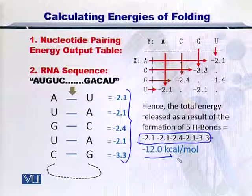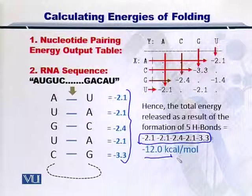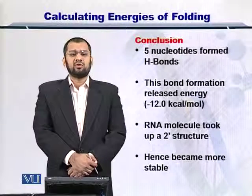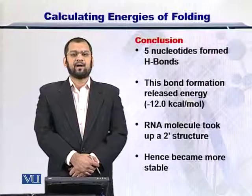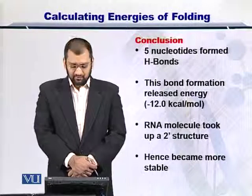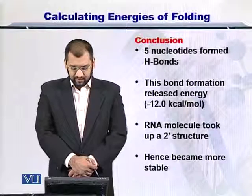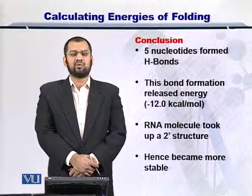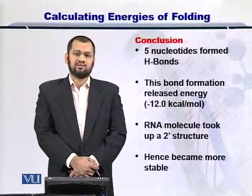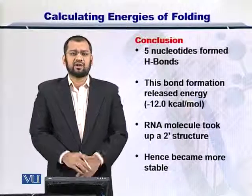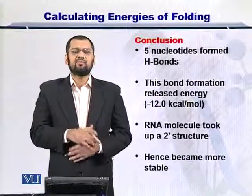The minus sign indicates that energy is released in the process, and we know that if the RNA molecule folds and energy is given out, the RNA molecule becomes more stable. To conclude, the nucleotides bonding together by making hydrogen bonds incur stability onto the RNA structure and give it a functional quality. The net energy released in this example was minus 12 kilocalories per mole. For a bigger structure, this calculation can be longer. As a result of this process, a secondary structure is formed and the RNA molecule becomes stable.